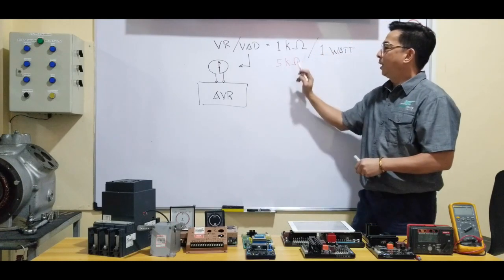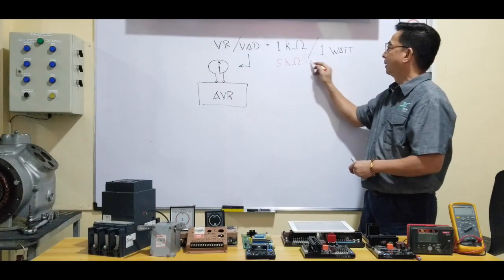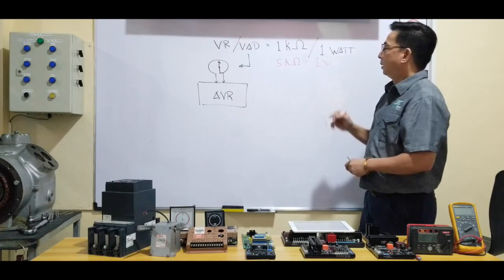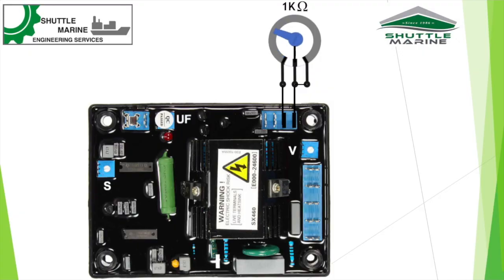Now, can I replace the 1k ohms? Definitely as long as it has the same wattage of 1 watt. So how is that? Well, if you're gonna break this down, 1k is the original value from 0 ohms up to 1k ohms.